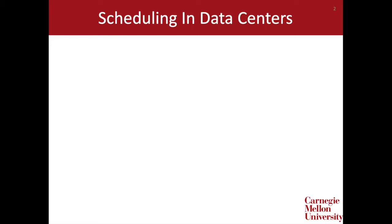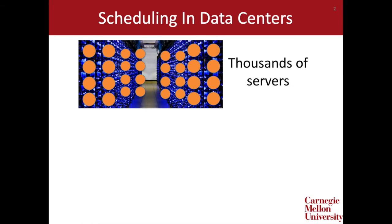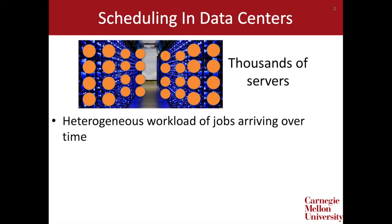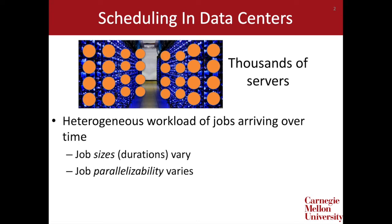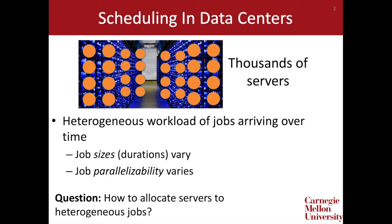Today I want to talk about scheduling parallelizable jobs and specifically scheduling in data centers. Data centers are purpose-built to exploit parallelism and often consist of thousands of servers. Modern data centers are tasked with processing heterogeneous workloads of jobs which arrive over time. These jobs can vary along several dimensions — for example, in size or duration, and in their level of parallelizability, meaning some jobs scale well across many servers while others can only leverage a small number. Our question is: given this heterogeneity, how should we allocate servers to jobs?